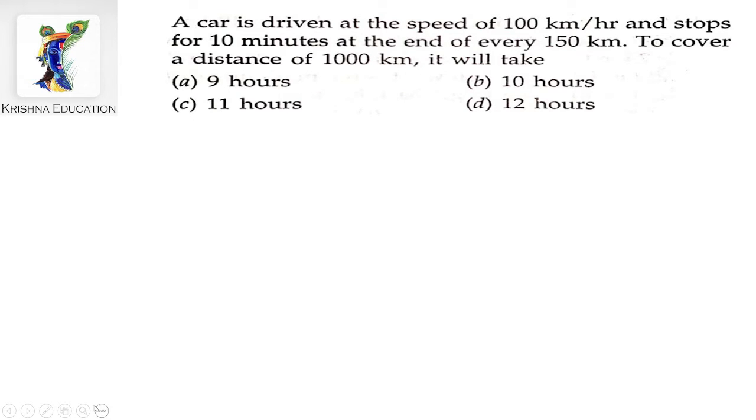Here the question is: a car is driven at the speed of 100 km per hour and stops for 10 minutes at the end of every 150 km. To cover a distance of 1000 km, we need to find out the time taken to cover this distance.